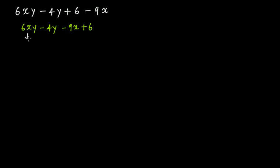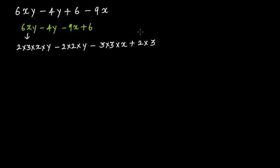Breaking into irreducible factor form: 6xy is 2 multiplied by 3 multiplied by x multiplied by y, then minus sign. 4y is 2 multiplied by 2 multiplied by y — irreducible factor form. Then minus 9x is 3 multiplied by 3 multiplied by x. And 6 is 2 multiplied by 3. Here you have 2 and 2 common, and y and y common. Let's take 2y as the common factor; within the bracket you get 3x minus 2.